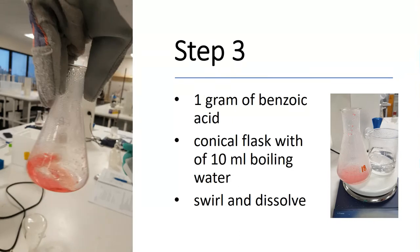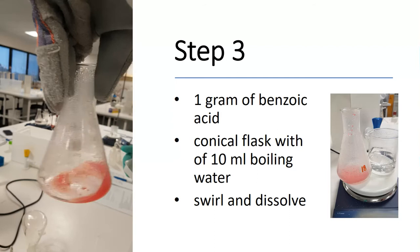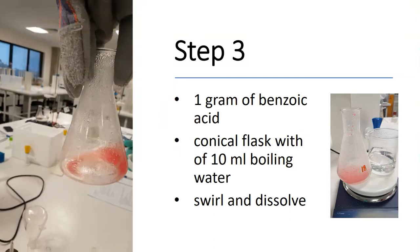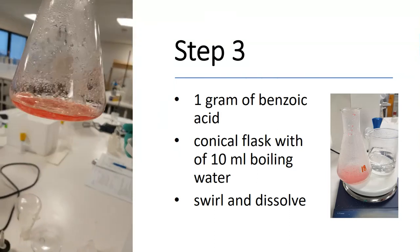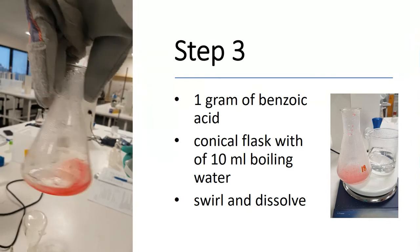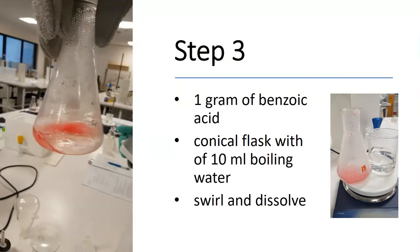Step 3. Measure 1g of impure benzoic acid and record the exact mass in the lab book. Add the 1g of benzoic acid to the 10ml of boiling water and dissolve by swirling gently.